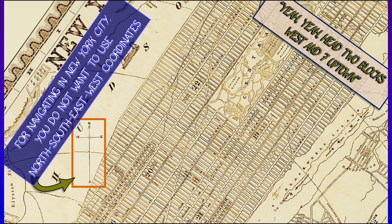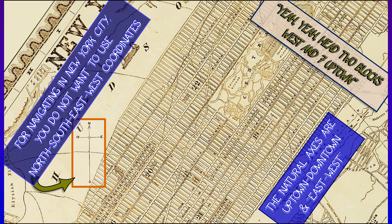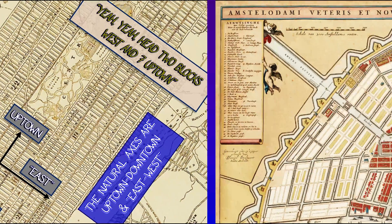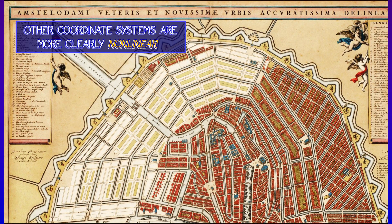You would not want to use standard north-south-east-west coordinates. You want a coordinate system that's aligned with the grid of streets — going uptown, going downtown, going east side, west side. That's a great example of a non-standard but still linear coordinate system.